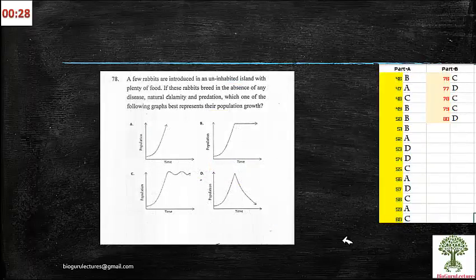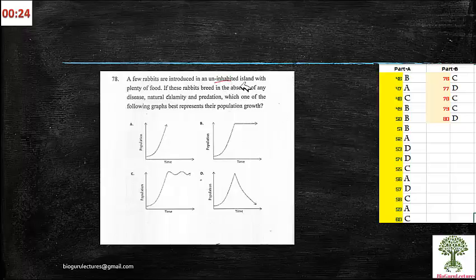78th one: a few rabbits are introduced in an uninhabited island with plenty of food. If these rabbits are in the absence of any disease, natural calamity, and predation, which one of the following graphs best represents their population growth? 78th one is C. When you try to look at this, we have already seen the population, the birth and rapid growth phase, and then gradually what happens is, at a stage, the stationary growth of organisms will take place. And later you can see the matured organisms are going to die. Hence, the population comes down. Again it's going to rise up to some level, and again the matured organisms are going to come down. This is a continuous process where you can see wave-like structures are going to be formed.